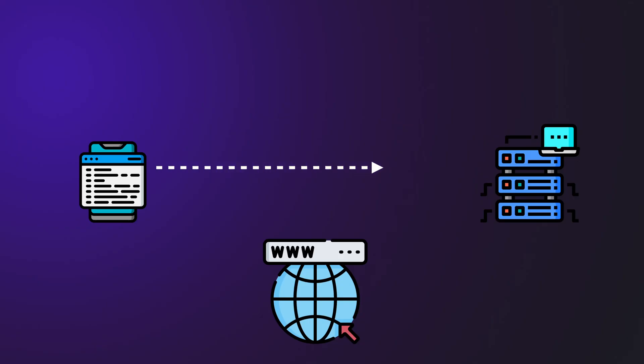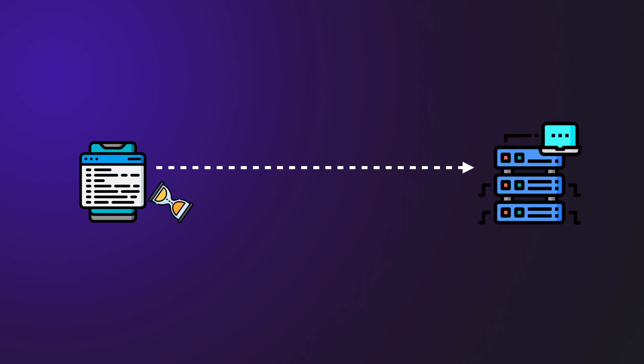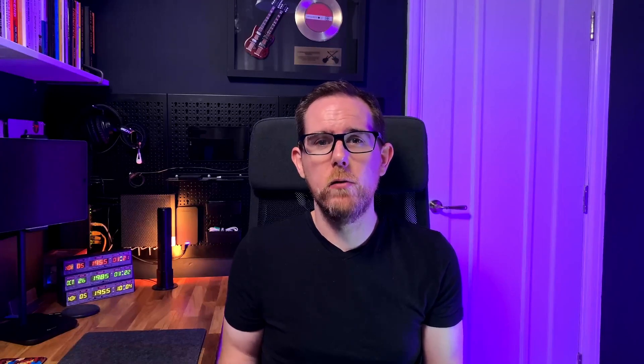What happens if your user's internet connection cuts out just after making a request? Or maybe your server's struggling under load and the client times out before it can receive a response? Usually errors are handled by the client by doing retries. If there's an error or the request times out, then the client will retry a number of times, either automatically or by a frustrated user hitting that submit button. If the user sends multiple requests to the server and more than one of them gets through, then you'll likely end up with duplicates on your end.